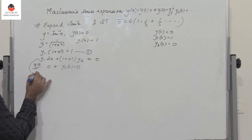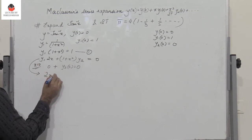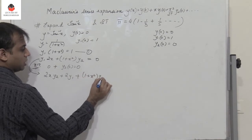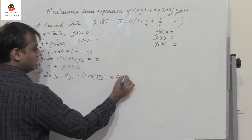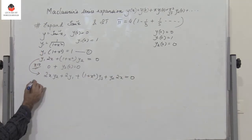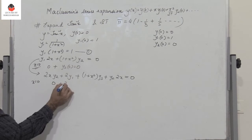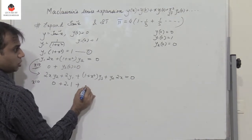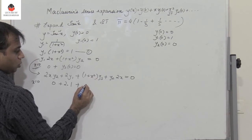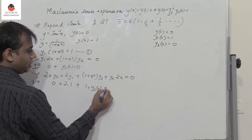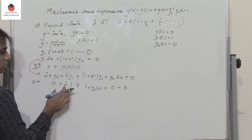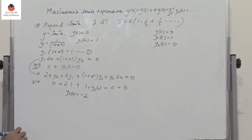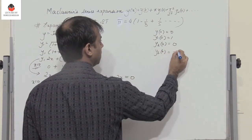Differentiating again: 2x·y₂ + 2·y₁ + (1 + x²)·y₃ + y₂·2x = 0. Put x = 0: 0 + 2·y₁(0) + 1·y₃(0) + 0 = 0. So y₃(0) + 2 = 0, giving y₃(0) = −2.